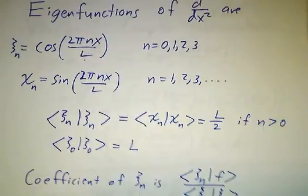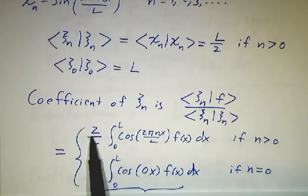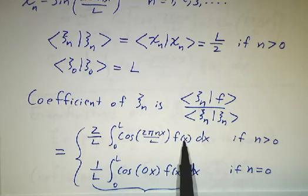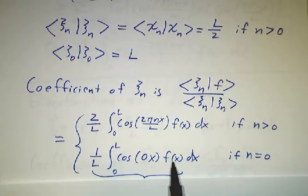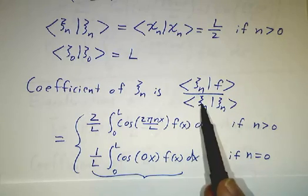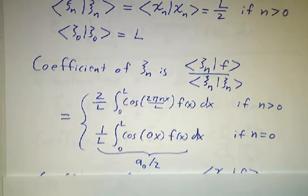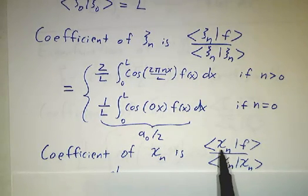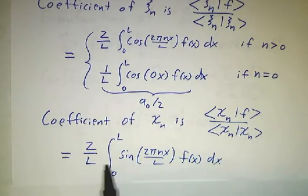So the coefficient of ψn is going to be the inner product of ψn with itself, and that gives you 2 over L times the integral of f times cos if n is bigger than 0. It gives you 1 over L times the integral if n is 0, because the inner product of this with itself is L instead of L over 2. And so we don't call this a0, we call this a0 over 2. The coefficient of χn is the same thing, only you use χ's instead of ψ's.